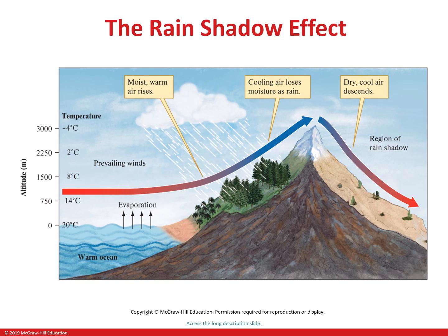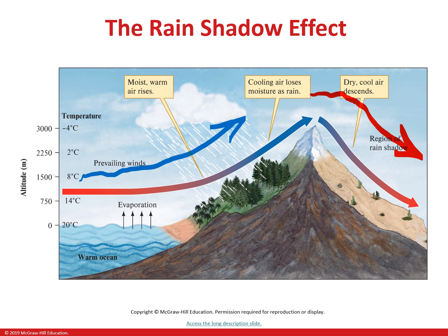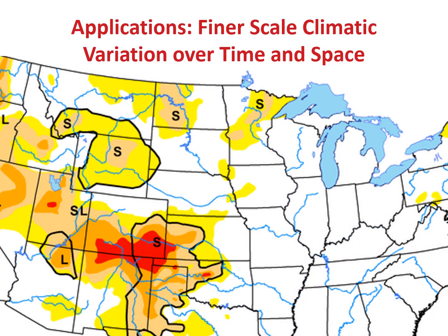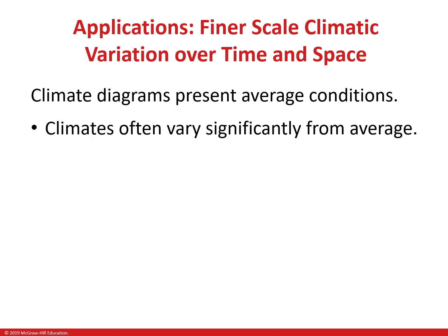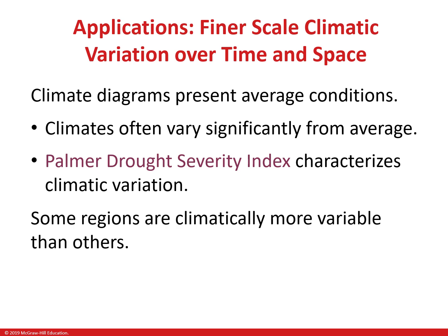Mountains create a rain shadow effect: moisture carried from the ocean is pushed up the mountainside, condenses and cools, precipitating on that side. By the time air gets to the other side, it has dried out, and falling back down creates a desert on the rain shadow side. We also talked about soil, finer-scale variation over time and space, and the Palmer Drought Index. Climate diagrams look at average conditions; one way we measure on a daily basis is the Palmer Drought Index.